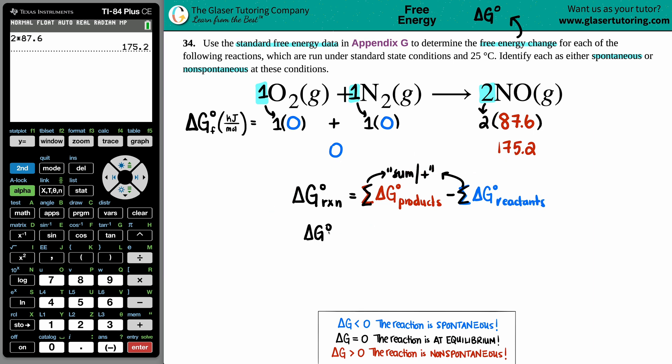Delta G for the whole entire reaction equals products, which is 175.2 minus zero. We got this right from this part. We don't need calc. Delta G for the whole entire reaction is 175.2.